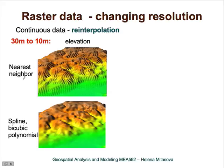For example, if you apply nearest neighbor to continuous data, what you get is a discontinuous surface — you can see a lot of steps, resampling from 30 meter to 10 meter resolution. If you reinterpolate the map — calculating values between grid cell centers using a continuous function — the resulting surface will be smooth. Usually when working with continuous data, you want the new raster map to also be continuous.